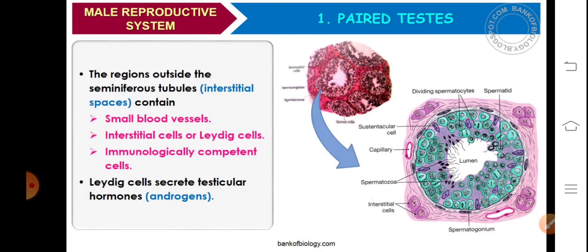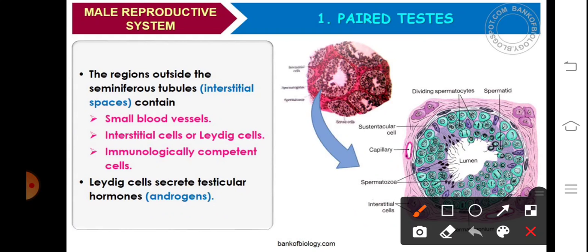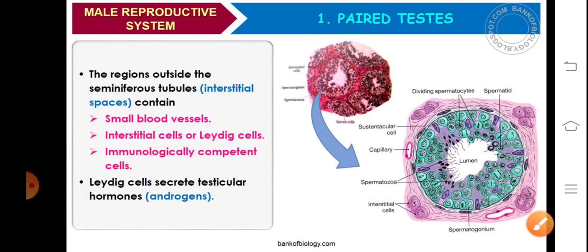These are called as interstitial or Leydig cells, and these Leydig cells will secrete testosterone. The testosterone will enter from the Leydig cell into the seminiferous tubule by the process of diffusion. Under the effect of ABP, that will promote the process of spermatogenesis.